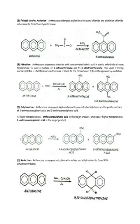Friedel-Crafts acylation: anthracene undergoes acylation with acetyl chloride and aluminium chloride in benzene to form 9-acetylanthracene. Nitration: anthracene undergoes nitration with concentrated nitric acid in acetic anhydride at room temperature to yield a mixture of 9-nitroanthracene and 9,10-dinitroanthracene.